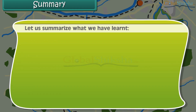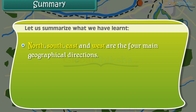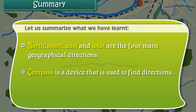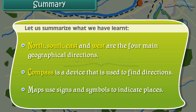Let us summarize what we have learned. North, south, east and west are the four main geographical directions. A compass is a device that is used to find directions. Maps use signs and symbols to indicate places.